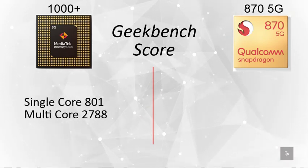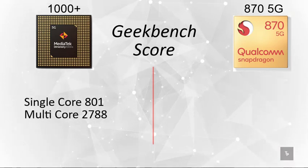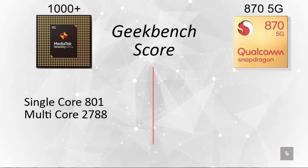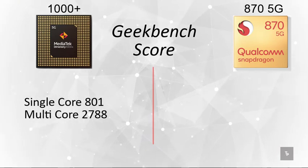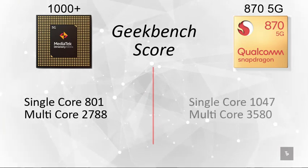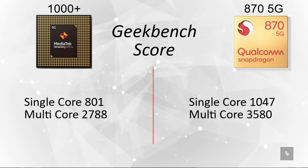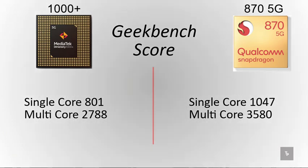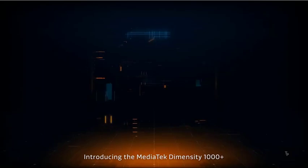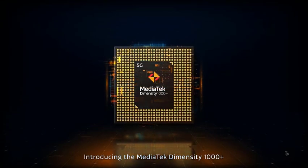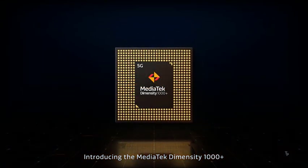On the Geekbench scores, the Dimensity 1000 Plus scores 801 in single-core and 2788 in multi-core. The Snapdragon 870 scores 1000 in single-core and 3600 in multi-core, showing a notable performance advantage.